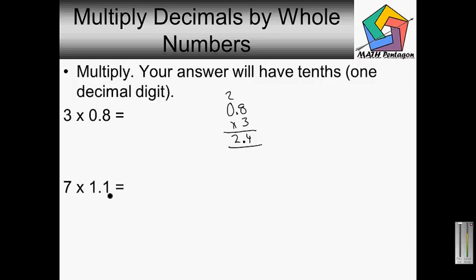Here we have 7 times 1.1. So 1.1 times 7. 7 times 1 is 7, and 7 times 1 is 7. Bring down this 1 decimal place. So it would be 7.7 as our final answer.